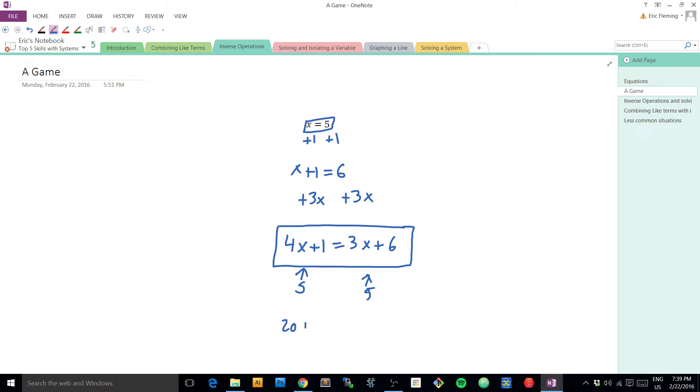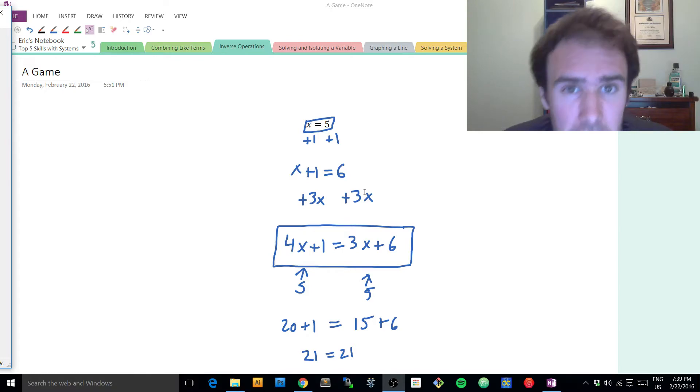So if I were to put a 5 here and a 5 here, I would get 4 times 5, which is 20. Over here I would get a 15. So is it true that 20+1 is equal to 15+6? Yes, 21 is equal to 21. Now let's pause for a moment. Now what I just did seems really, really silly,